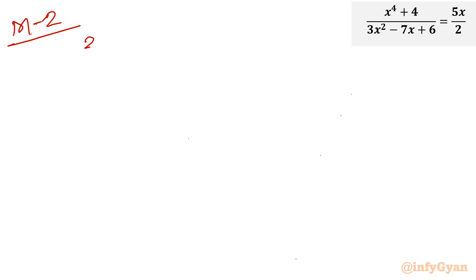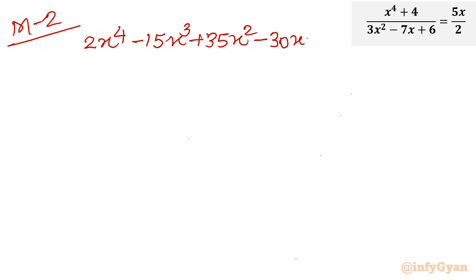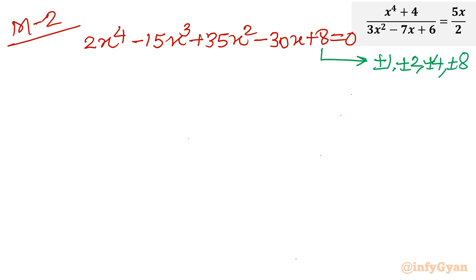Once again I will write our quartic equation: 2x power 4 minus 15x cube plus 35x square minus 30x plus 8 equal to 0. The constant coefficient is 8, so I am finding the eligible factors using the Rational Root Theorem. The candidates are plus or minus 1, plus or minus 2, plus or minus 4, plus or minus 8.